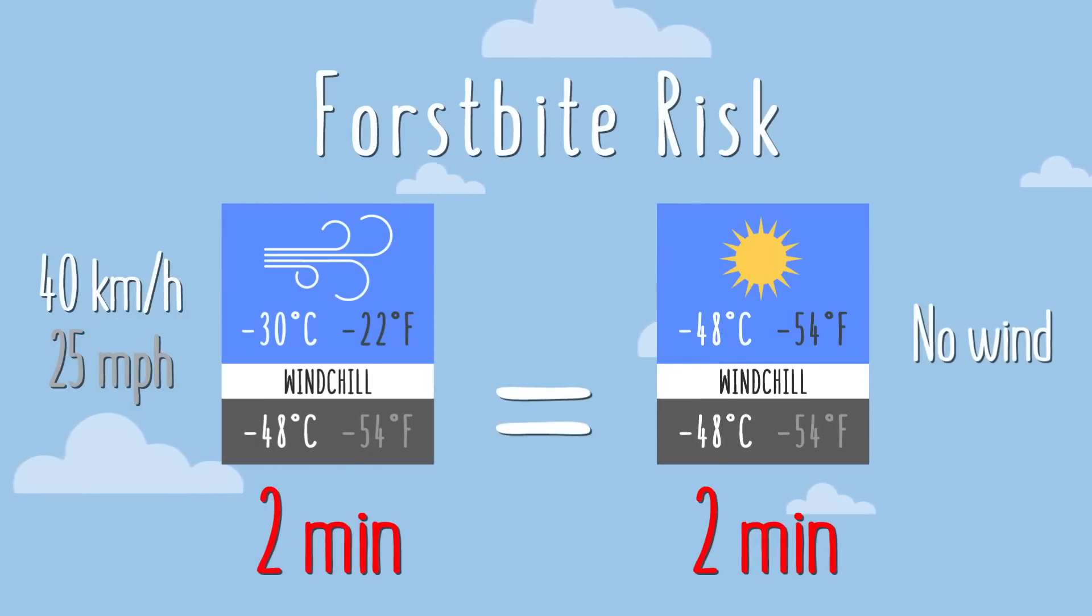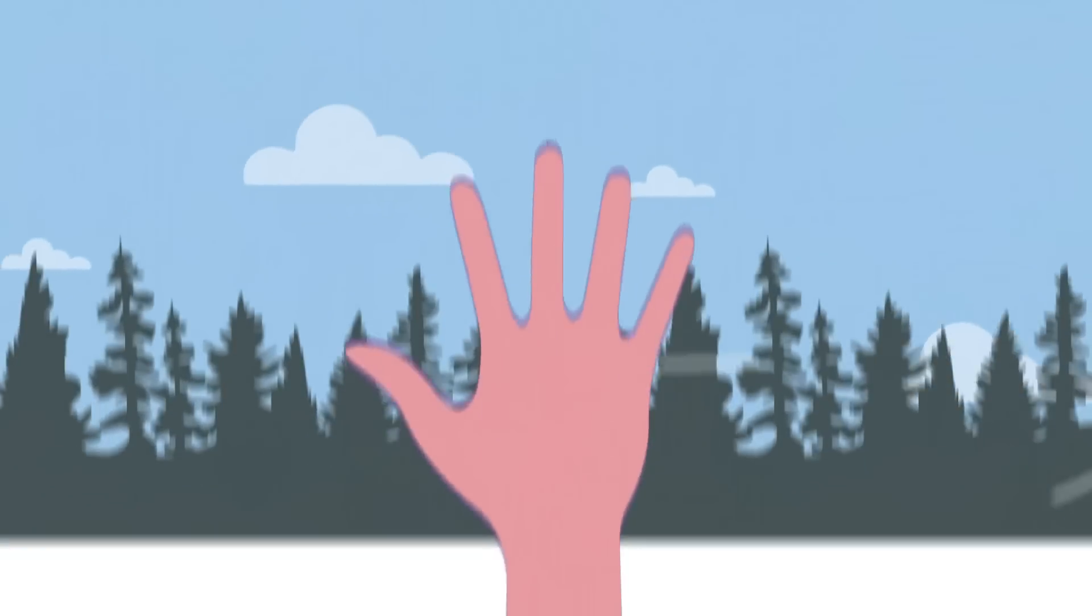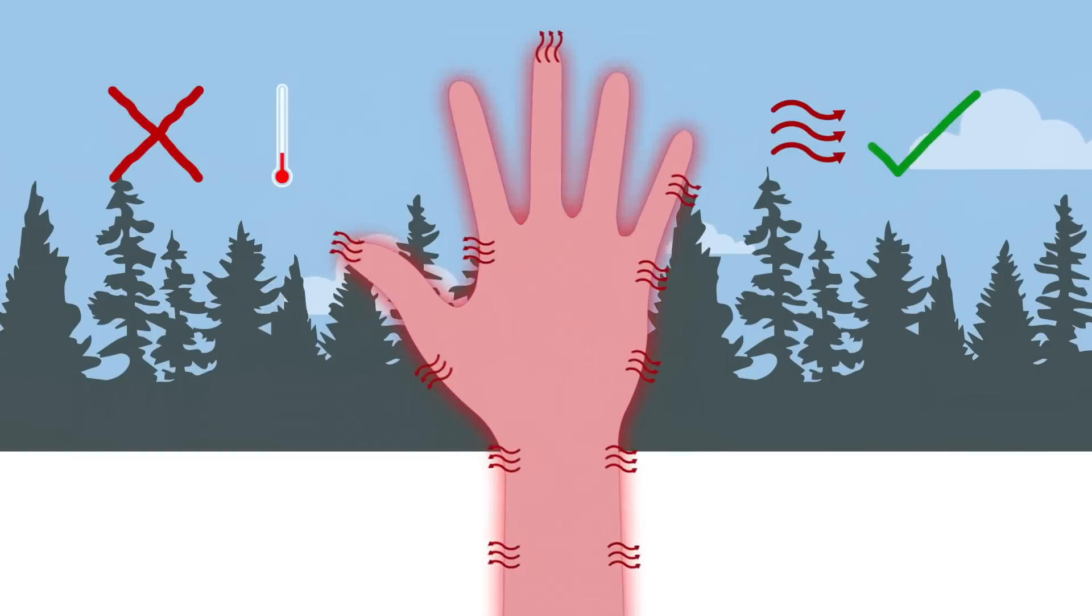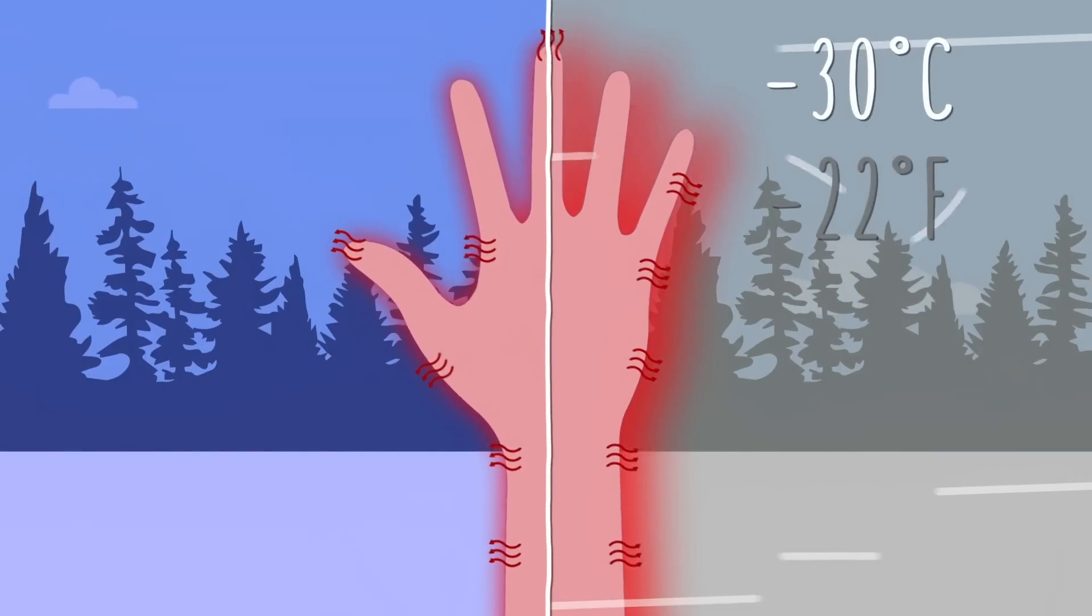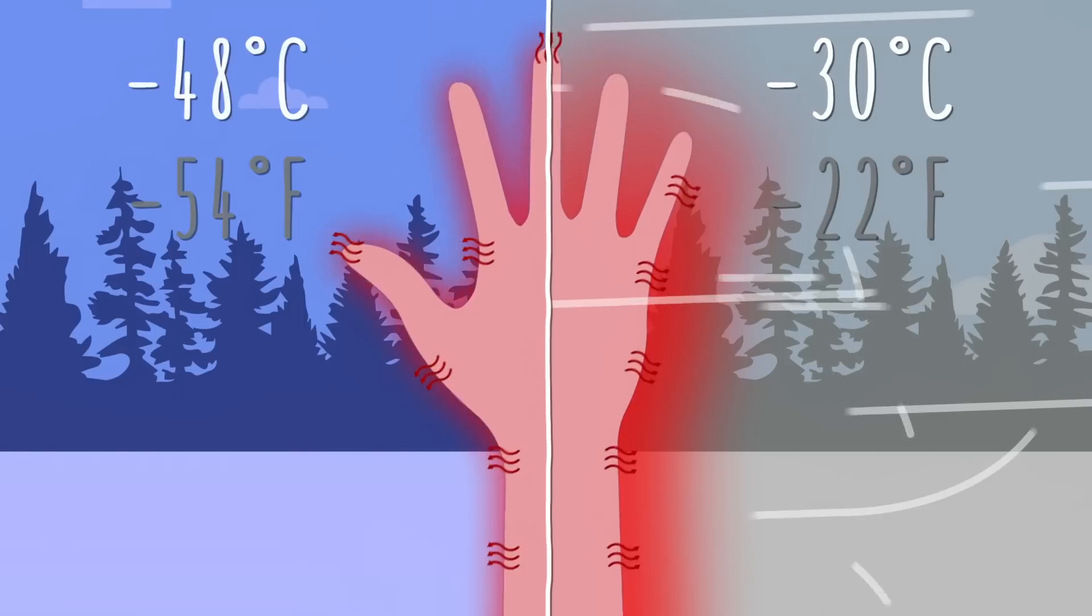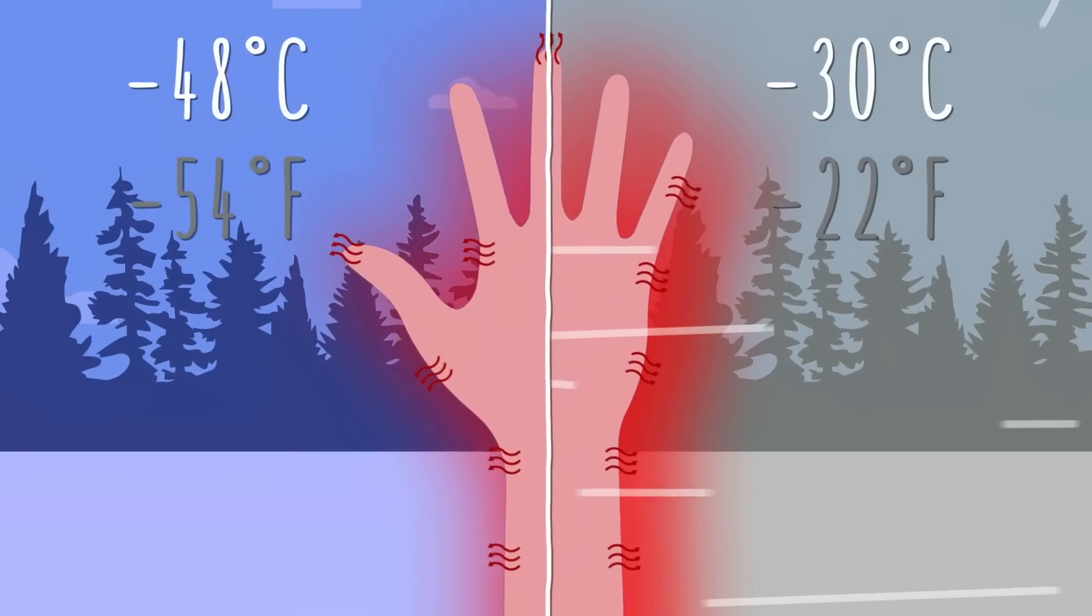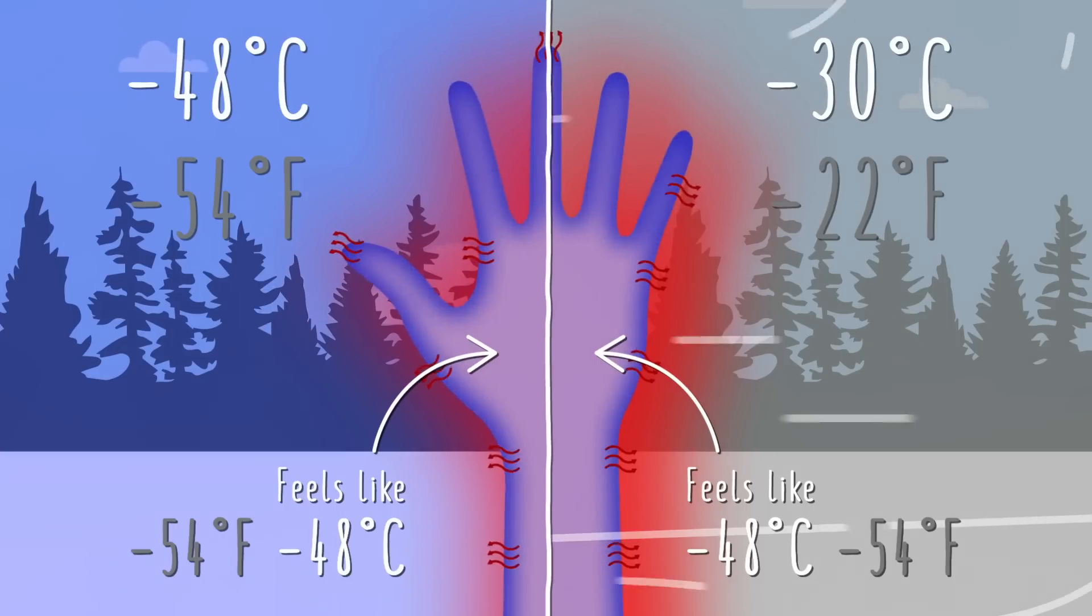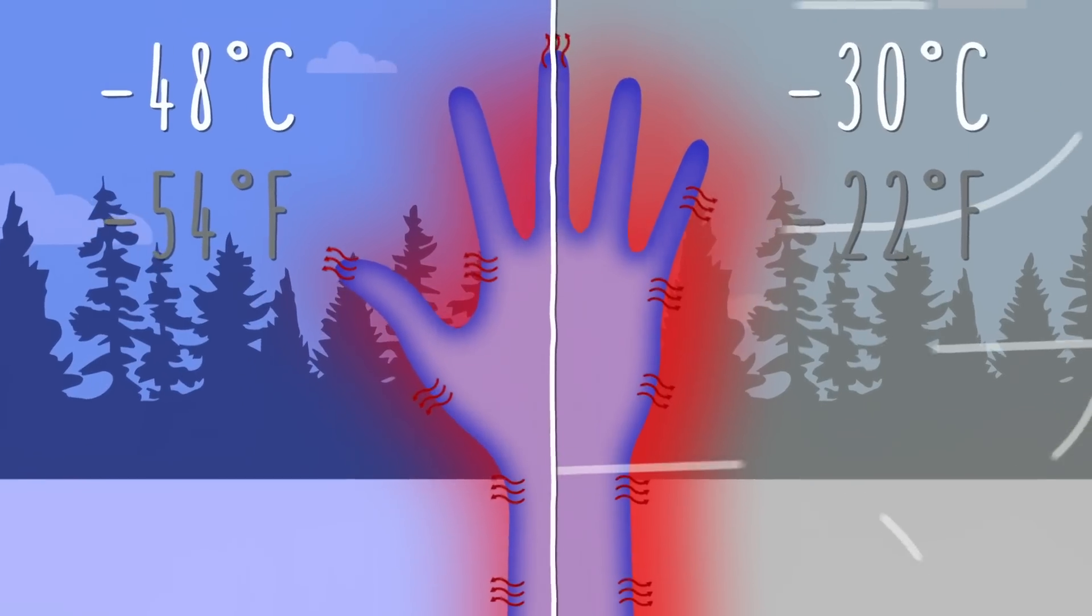And this is finally where the windchill factor comes in. Because, as I mentioned, the windchill is not an actual temperature, but rather a way of communicating the perceived temperature. Or in other words, the windchill tells us how cold it will feel. Because again, our body doesn't sense the actual temperature, it senses the heat transfer from our skin to the air. So, since we lose the same energy at minus 30 with a strong wind as we do at minus 48 with no wind, to our body, they essentially feel like the same thing and come with the same risks.